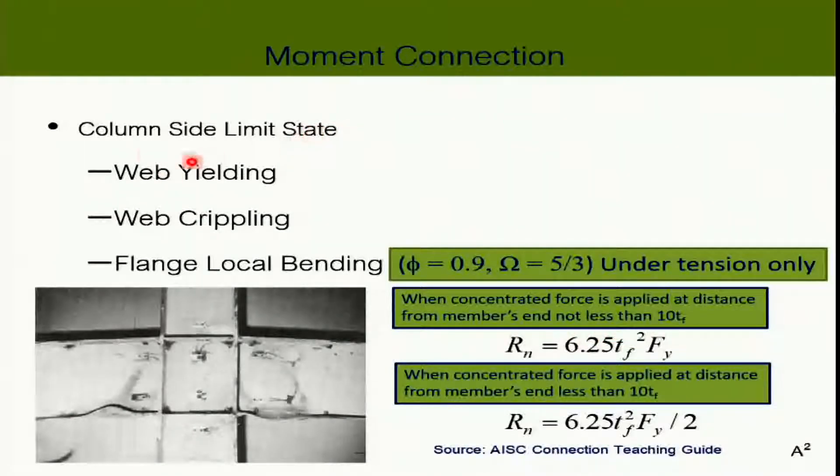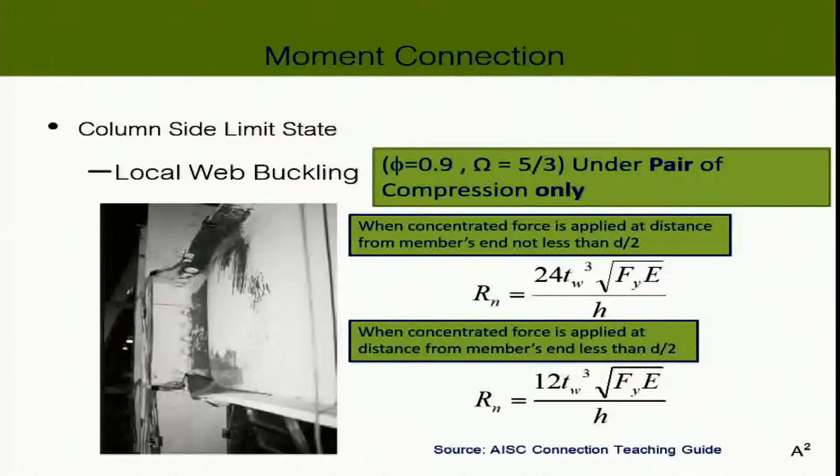And the column size limit states is, as I mentioned before, web yielding, web crippling and something extra such as flange local bending because this is under tension. Web yielding can be both under tension and compression because it's yielding. And then crippling, that's under compression. And then we have the one additional that is called flange local bending. And we also have another one called local web buckling that can only occur under a pair of compressions. That means you have to have compression coming in from both sides for this to happen.